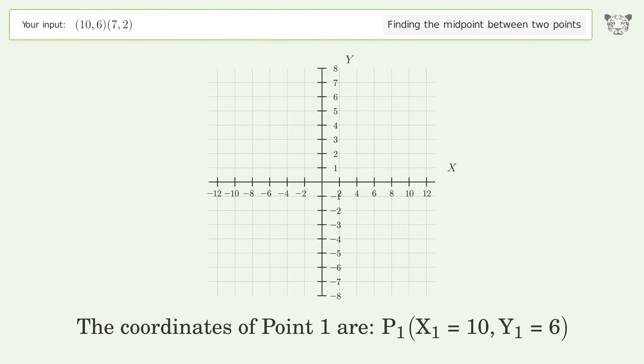The coordinates of Point 1 are: x1 equals 10, y1 equals 6. The coordinates of Point 2 are: x2 equals 7, y2 equals 2.